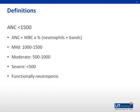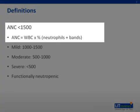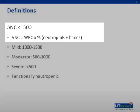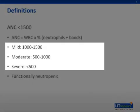Neutrophils, also known as polymorphonuclear cells, or polys, or segmented cells, are the most abundant white blood cell in the body and crucial to fighting infections. The absolute neutrophil count can be calculated as the total number of white cells multiplied by the percentage of neutrophils and bands, which are an immature form of neutrophils. If the ANC is less than 1,500, this is defined as neutropenia. Some people will break up neutropenia into mild, moderate, or severe based on an ANC of 1,000 to 1,500, 500 to 1,000, or less than 500.